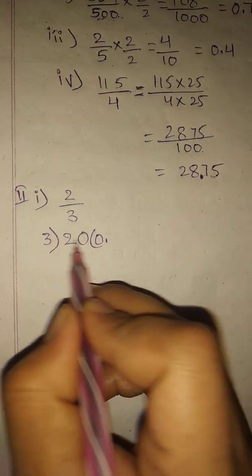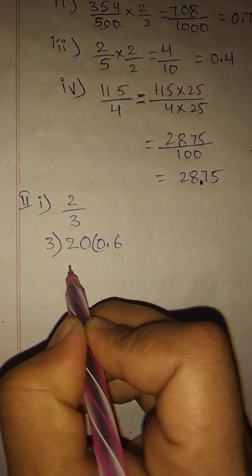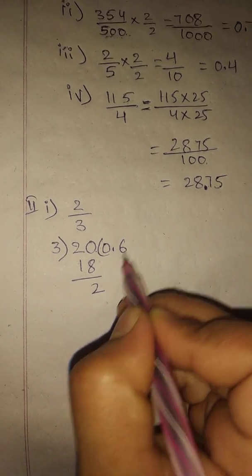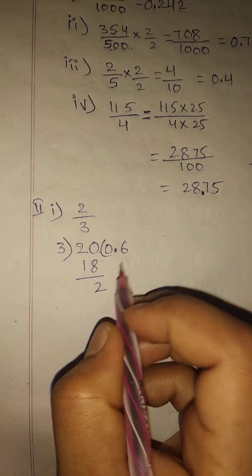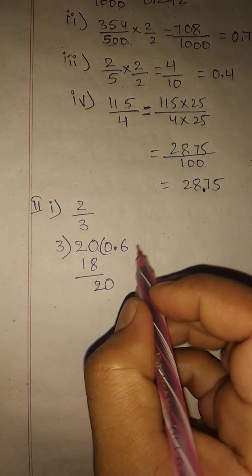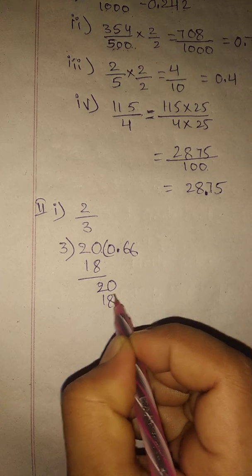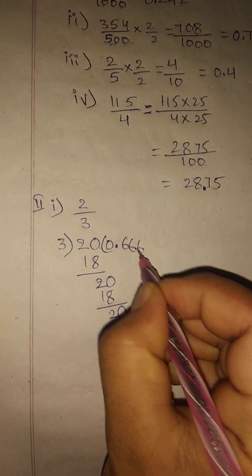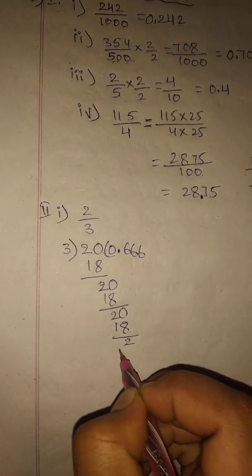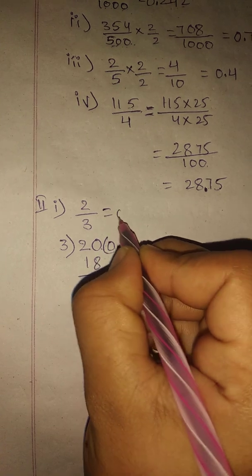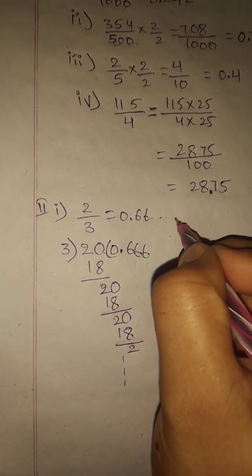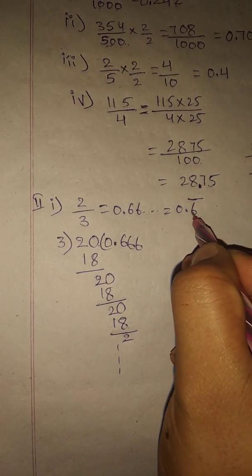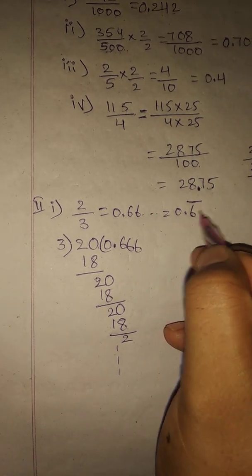For 2 by 3: take 20, and 3 times 6 is 18; 20 minus 18 is 2 again. Each time the remainder is 2, so the digit 6 repeats continuously. The answer is 0.6666... which we write as 0.6 bar, meaning the digit 6 repeats. When one digit repeats continuously, we place a bar over that digit.